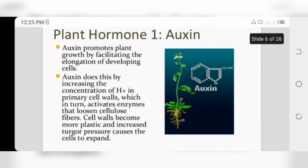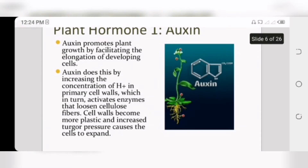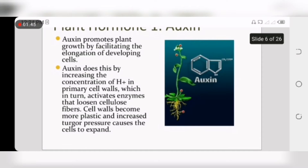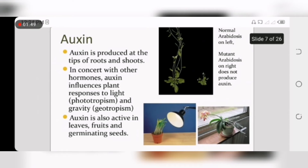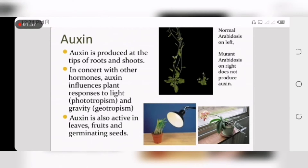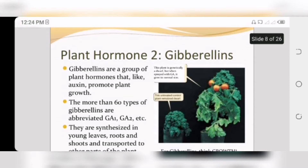The increased H+ ions activate enzymes that loosen cellulose fibers. Due to loosened cellulose fibers, the cell wall becomes more plastic and turgor pressure causes the cells to expand. Auxin is produced in the apical tips of fruits and shoots, and also causes the response to light called phototropism.